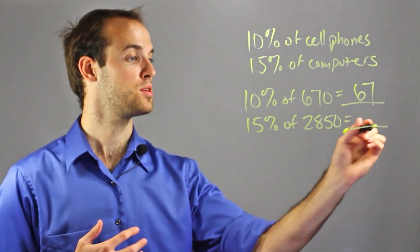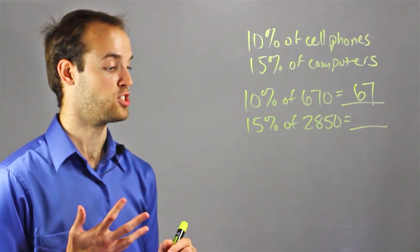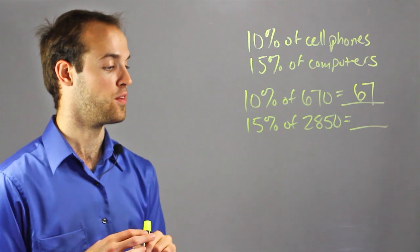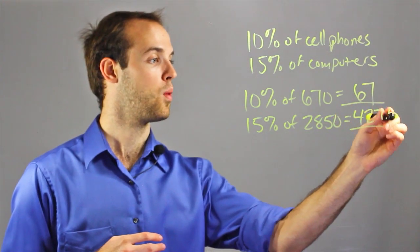So I'd want to find out what 15% of $2850 is, which I can get just by multiplying $2850 by .15, which is going to get me $427.50.